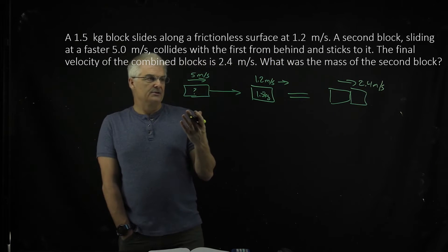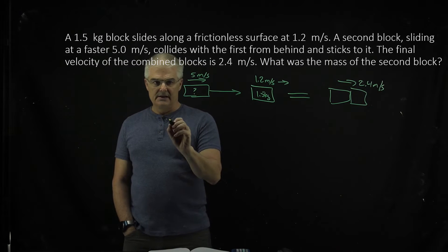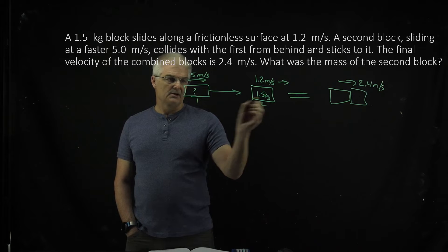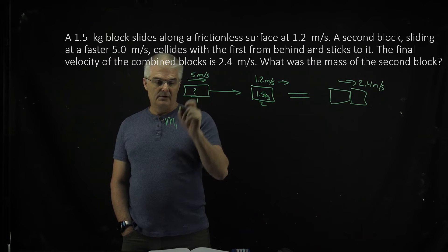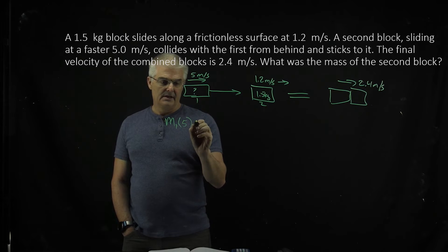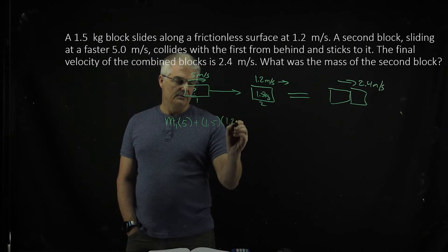So you're going to have to do, what is the total momentum before? So I'm going to say, I'll call this block 1 and this block 2. I'll say M1 times V1, which is 5, plus M2, which is 1.5, times 1.2.